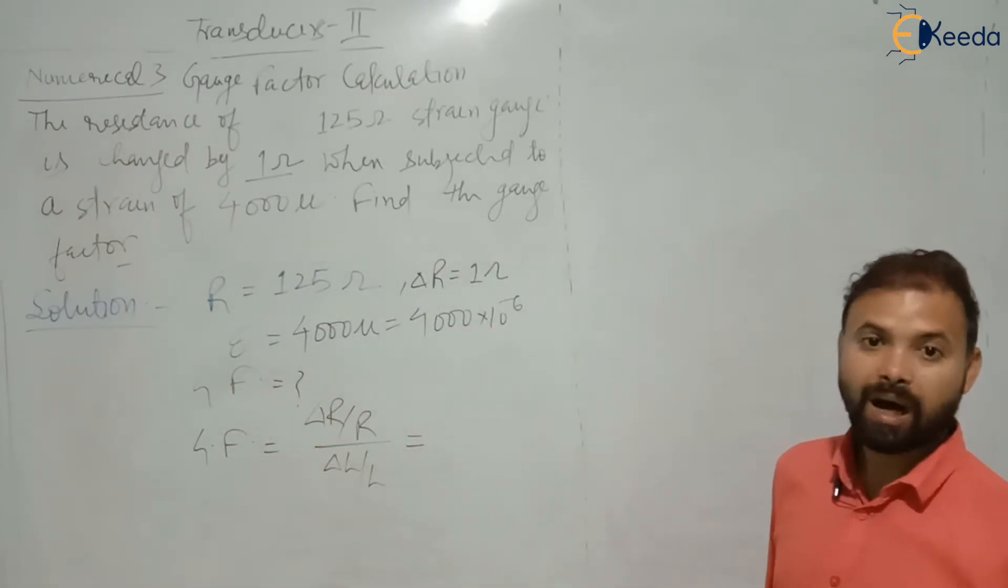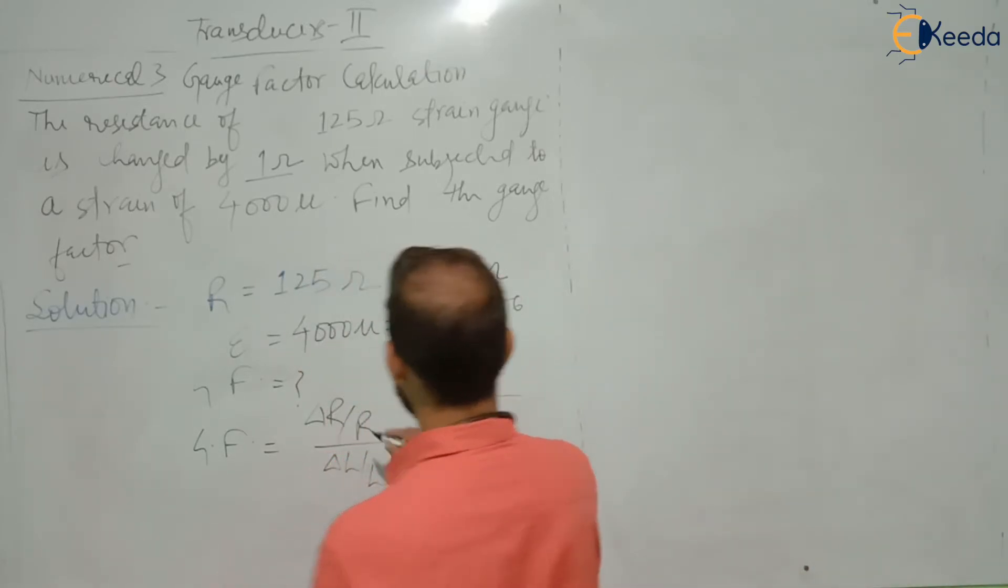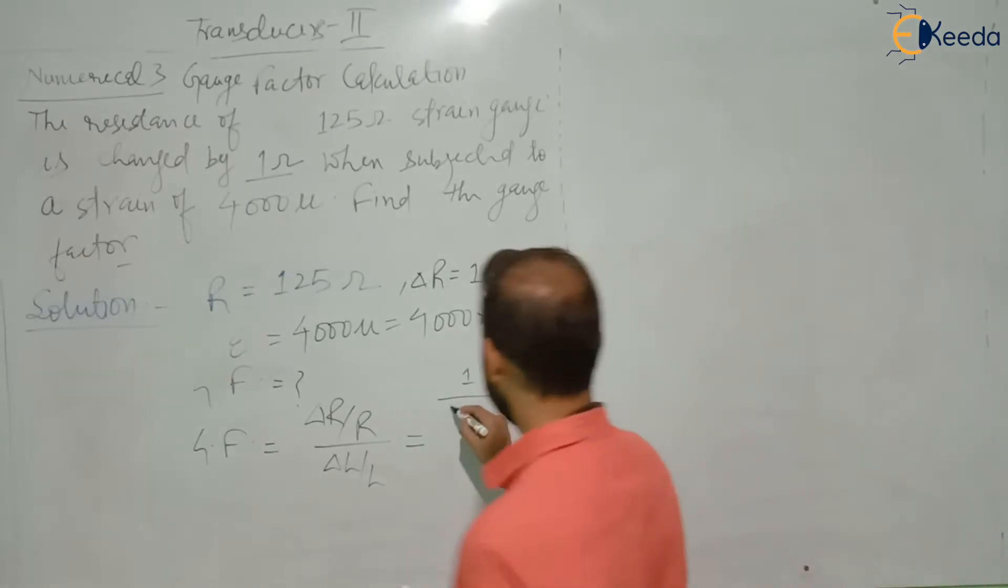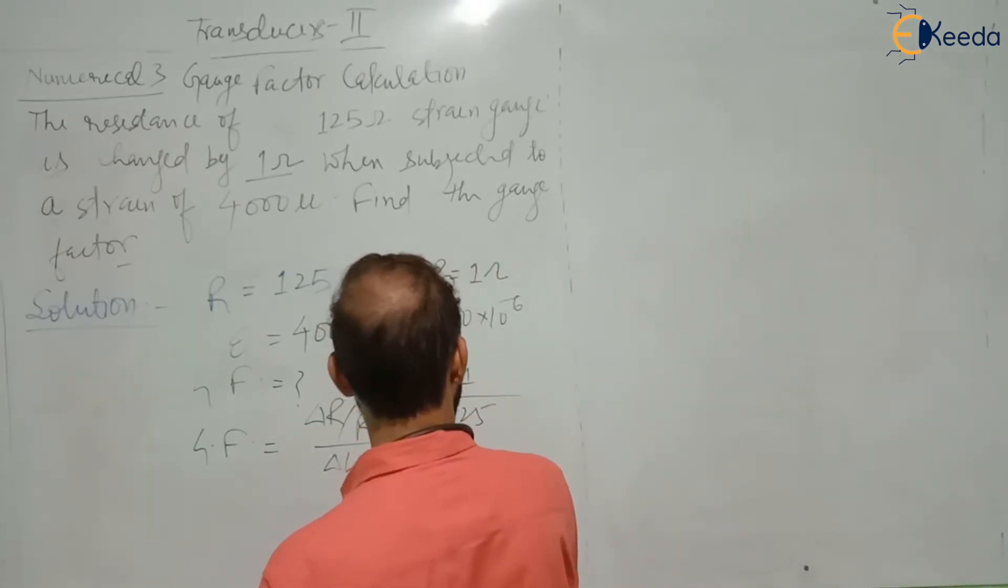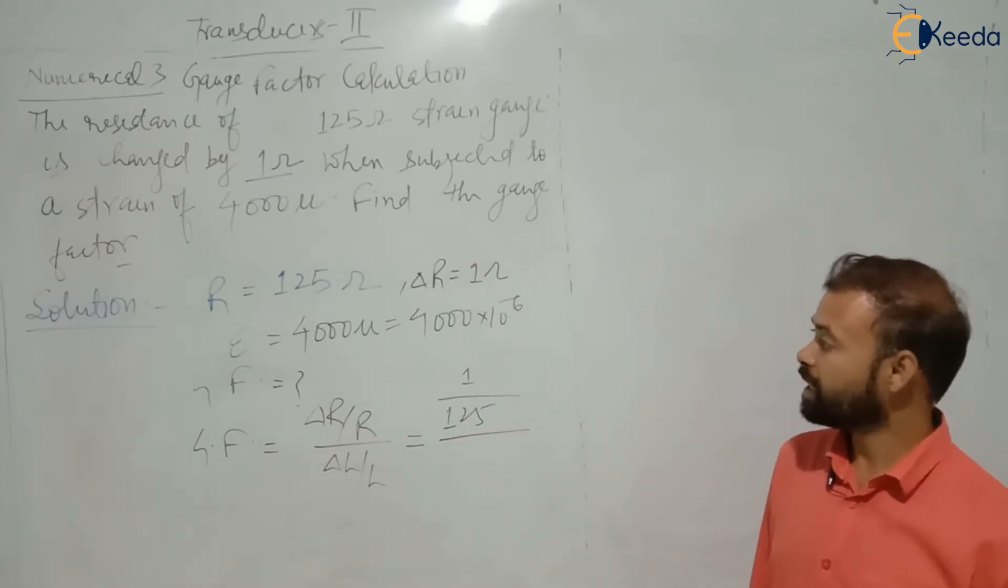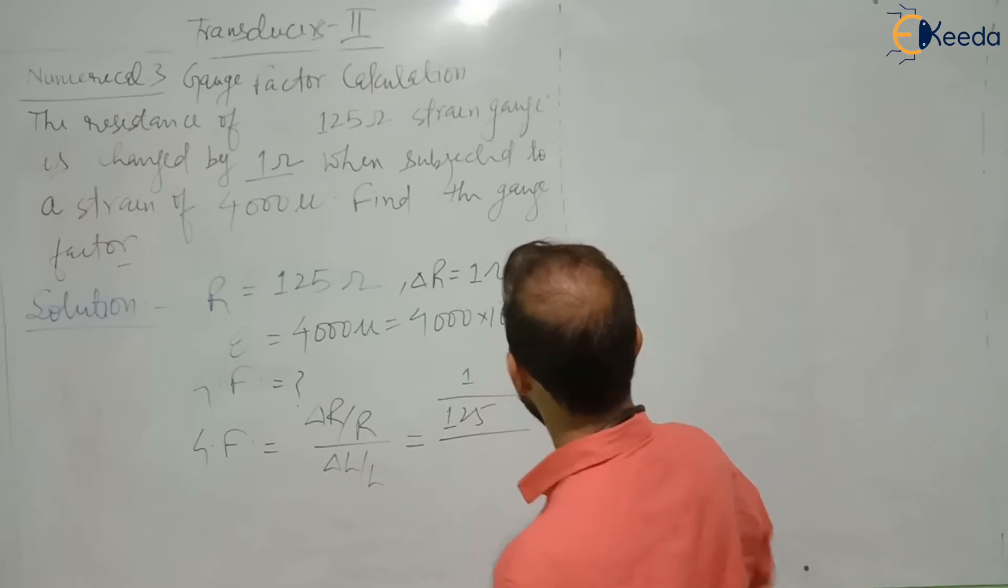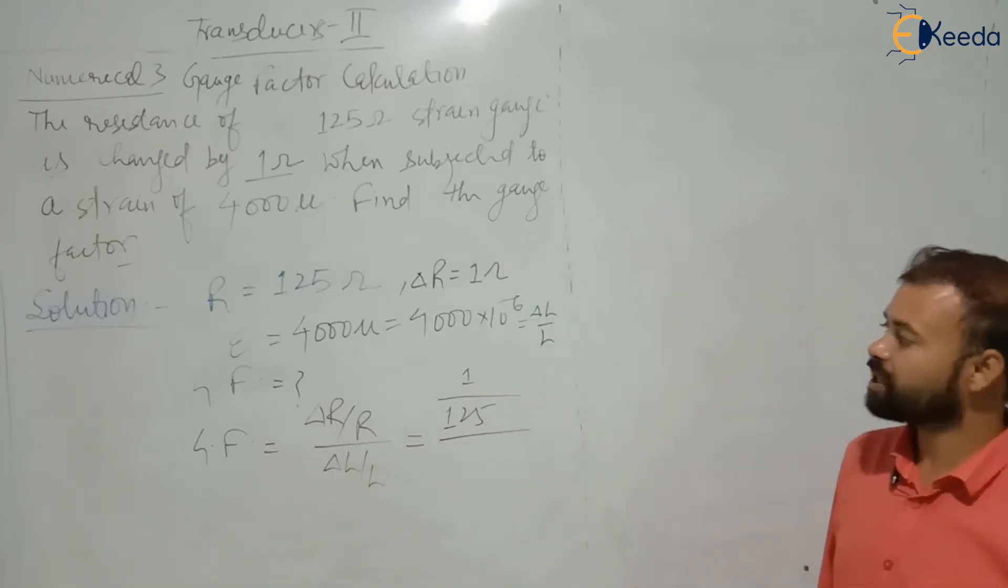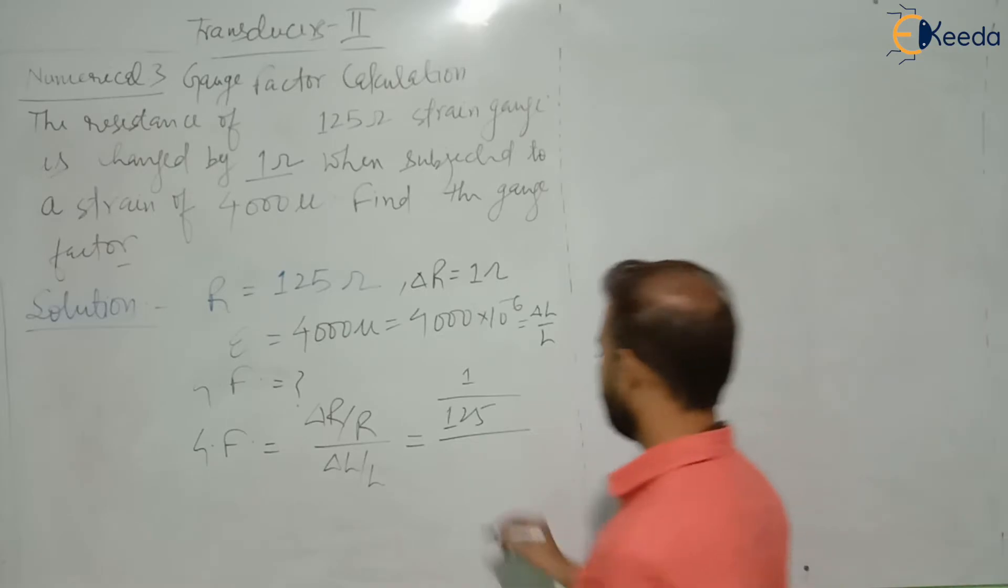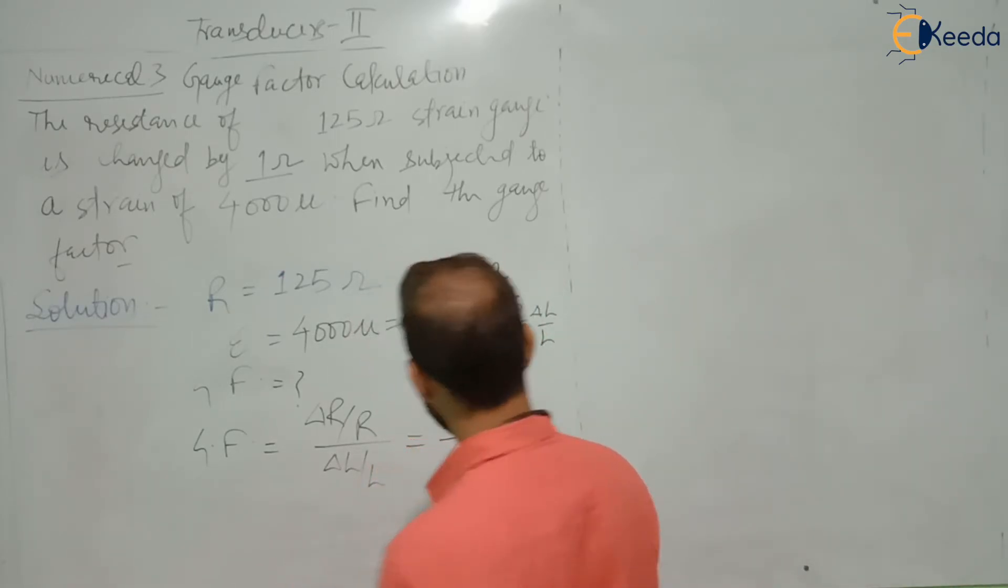No problem. Delta R is given, delta R is equal to 1 divided by R is given as 125 ohm, divided by delta L by L is nothing but this value epsilon. Delta L by L is 4000 into 10 to the power minus 6.